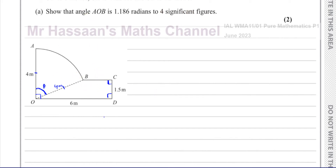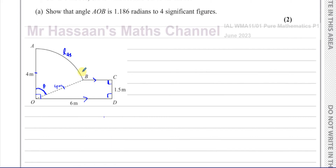We have all the information from above. Some students might think to use the arc length formula, but we don't know the length of the arc and we don't know theta — two unknowns — so we cannot find the angle that way. We need to focus on the trapezium shape instead.